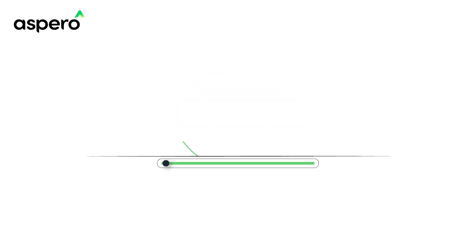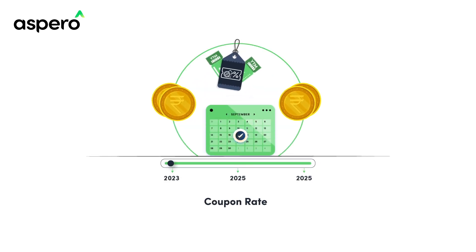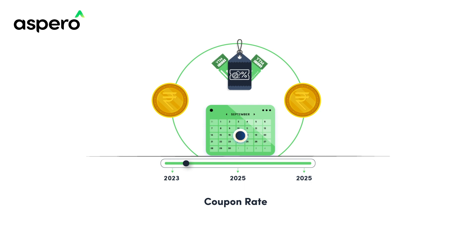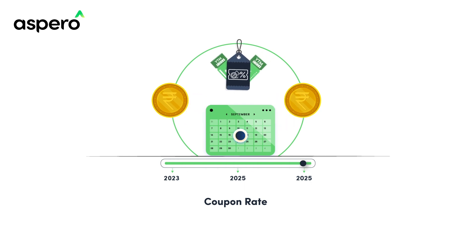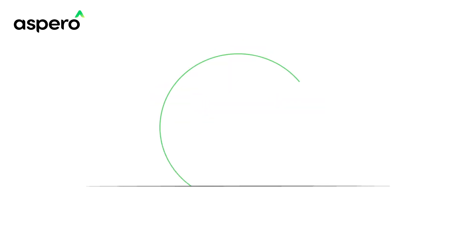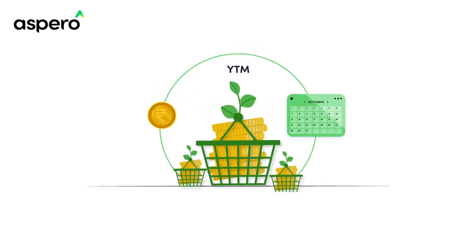The key difference lies in their focus. Coupon rate solely represents the annual interest income, while YTM provides a more comprehensive understanding of the bond's overall return for the given tenure.